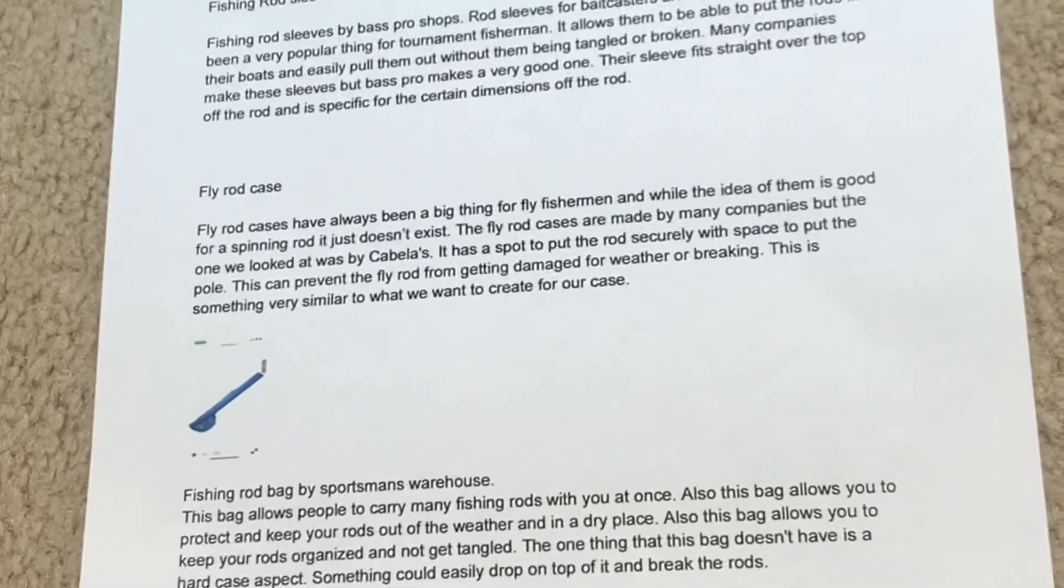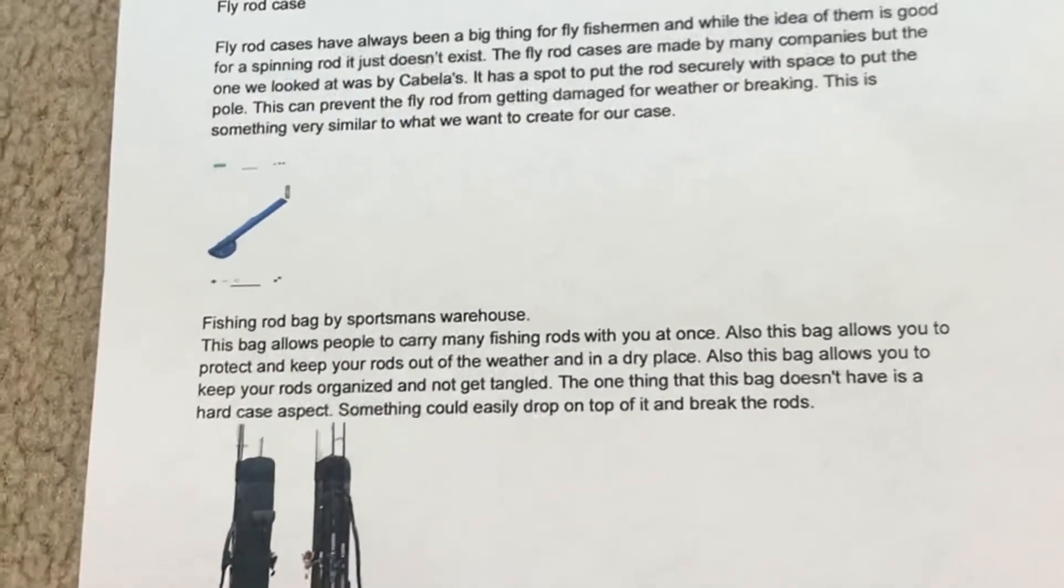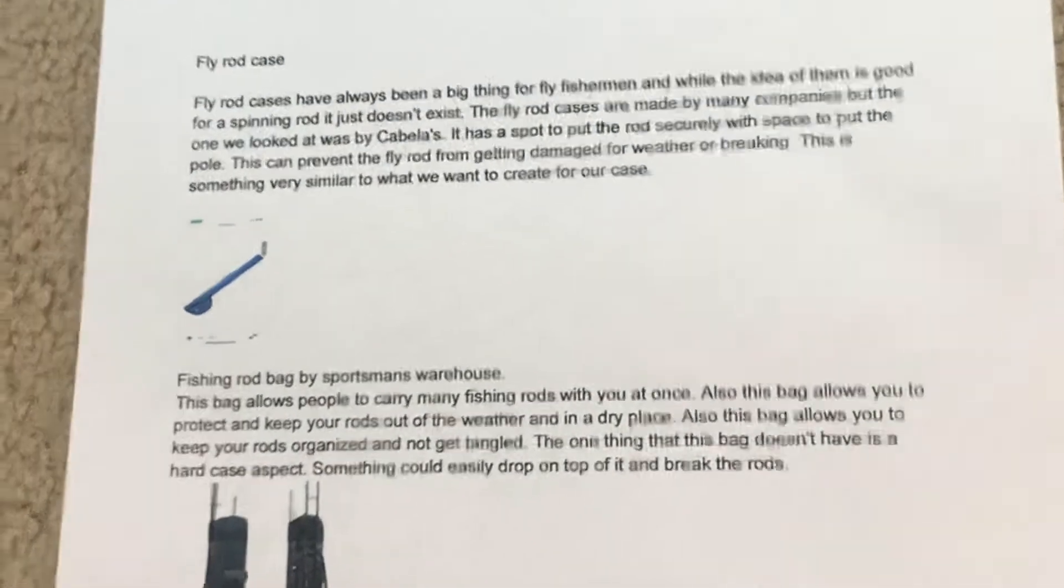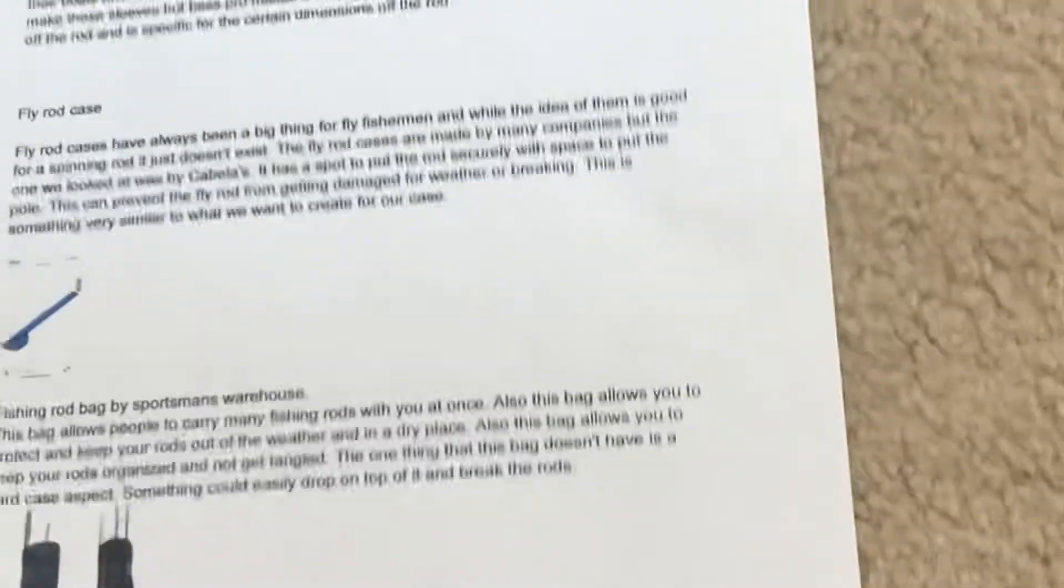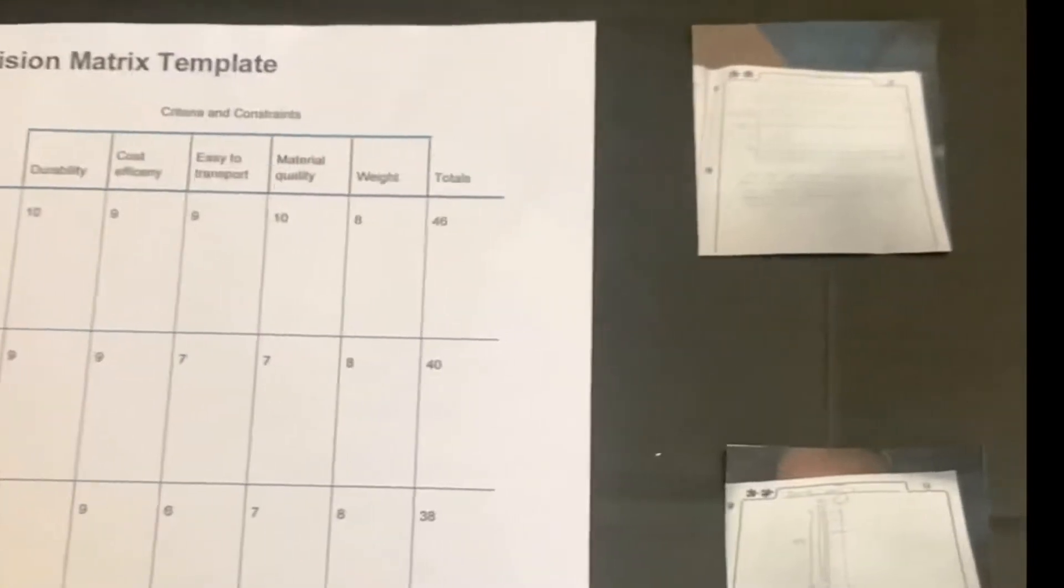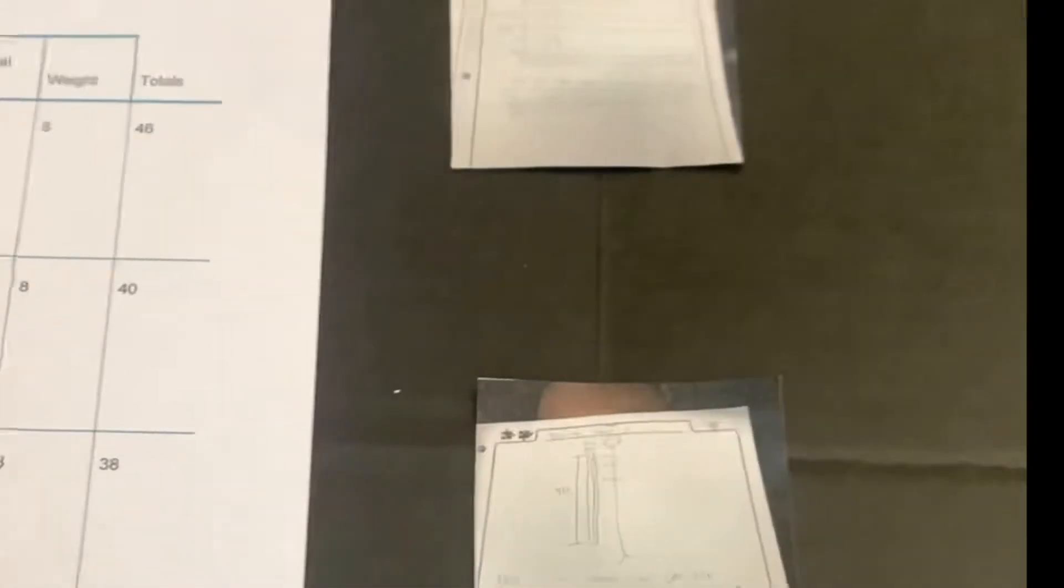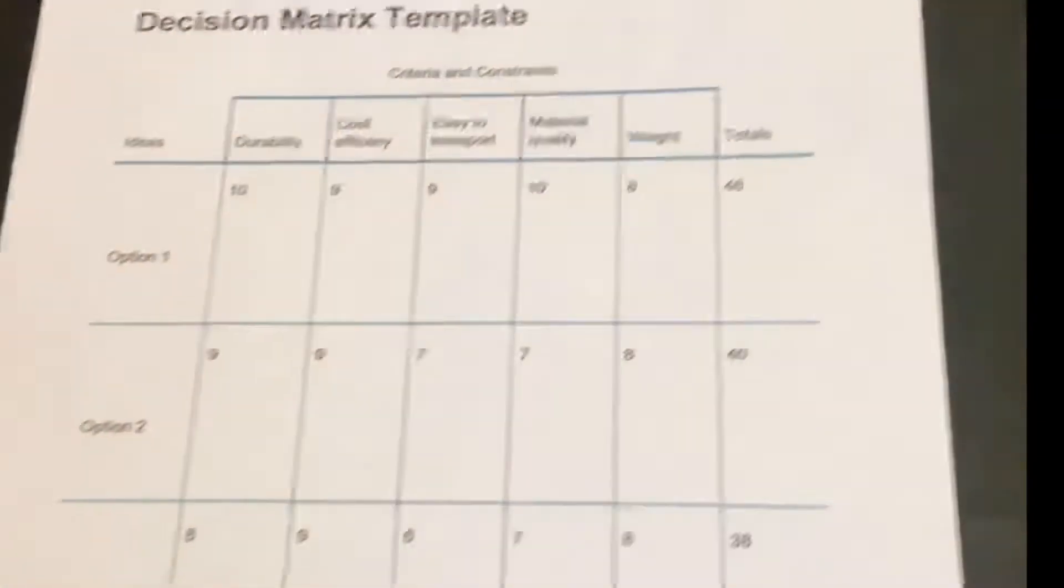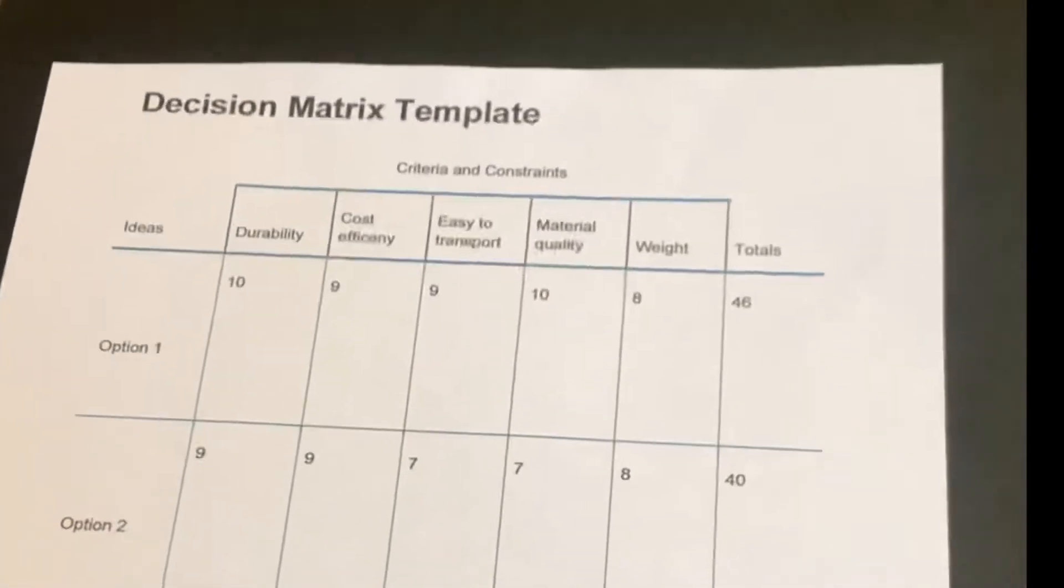Next up is a fishing rod bag and basically this is kind of like a backpack that you can just carry, but same thing, it's not a hard case. All right, so we had three main options for our decision matrix on which project we were going to do. Clearly we ended up going with our pole protector and this is the decision matrix on how we ended up deciding that that was the right idea.